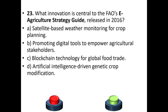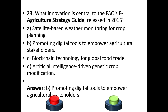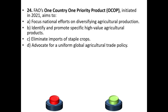Question 23: What is central to the FAO's e-Agriculture Strategy Guide released in 2016? a) Satellite weather monitoring for crop planning, b) promoting digital tools to empower agricultural stakeholders, c) blockchain technology for global food trade, or d) artificial intelligence-driven genetic crop modification. The answer is option B — promoting digital tools to empower agricultural stakeholders.